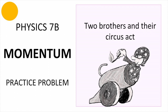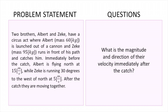Hello everybody, welcome back to our channel. Today we're going to be working on this Physics 7B momentum practice problem — the two brothers and their circus act problem. We have two brothers, Albert and Sig. Albert is launched out of a cannon, and Sig runs in front of his path and catches him. Immediately before the catch, Albert is flying north at 50 meters per second and Sig is running 30 degrees to the west of north at 5 meters per second. We're also given the masses for both Albert and Sig, and the most important thing is that after the catch they are moving together.